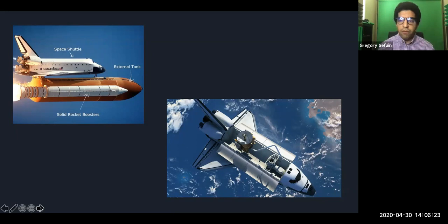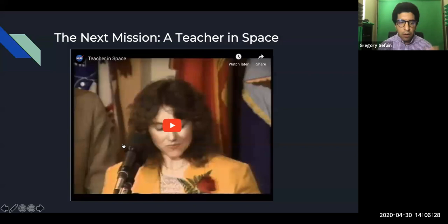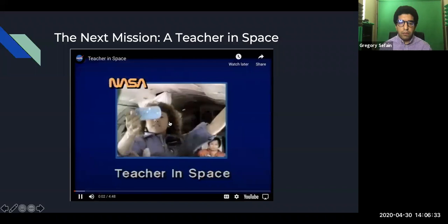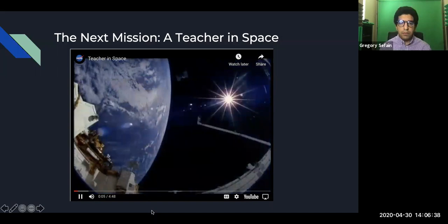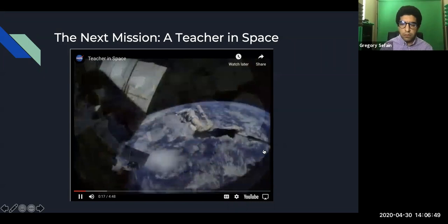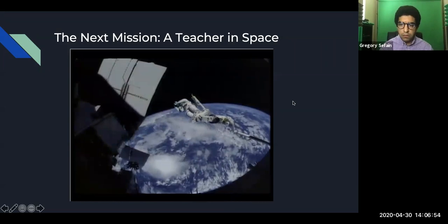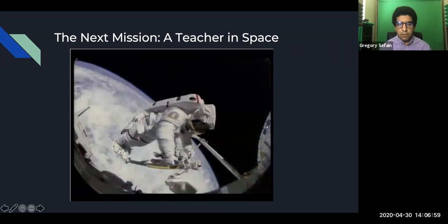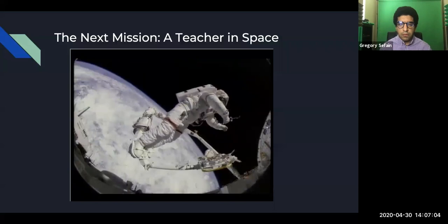And we have a video that captures that. Communicating the space experience, sending someone into Earth orbit who can tell us what it's like in our own terms, has long been a NASA goal. And in August 1984, the space flight participant program was given the green light by President Reagan. Today, I'm directing NASA to begin a search in all of our elementary and secondary schools and to choose as the first citizen passenger in the history of our space program, one of America's finest, a teacher.